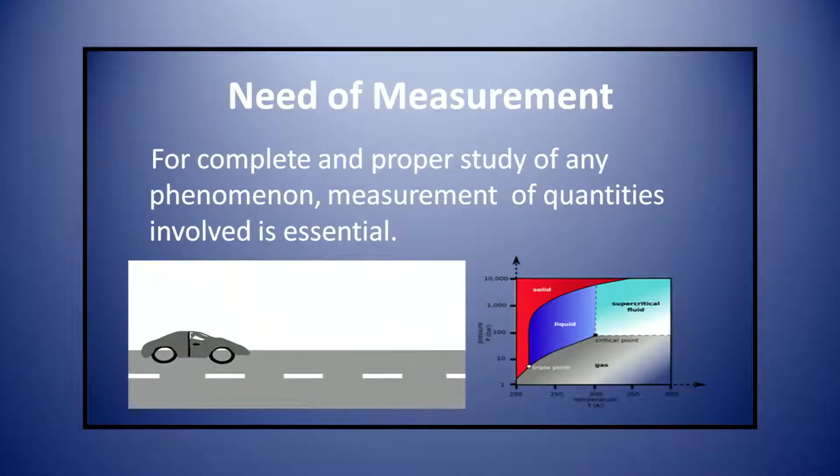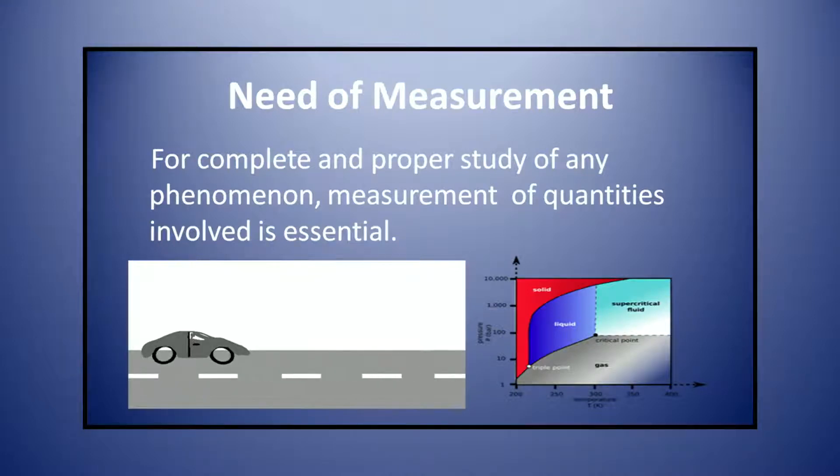The idea of base units leads us to the concept of dimensions, which has important applications in physics. For the complete and proper study of any phenomenon, measurement of quantities involved is essential. For example, to study the motion of a particle, measurement of its displacement, velocity, and acceleration at any instant has to be made accurately. For this, measurement of time and distance has to be done. Similarly, measurement of volume, pressure, and temperature is necessary to study the state of a gas fully. Thus, measurement of quantities such as distance, time, temperature, mass, force, etc., has to be made to study every natural phenomenon.